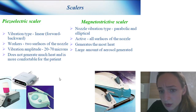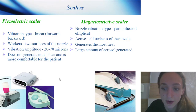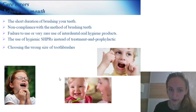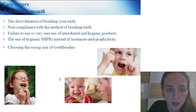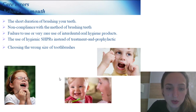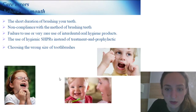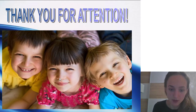Magnetostrictive scaler: nozzle of vibration type; active surface of the nozzle generates the most heat and a large amount of aerosol. Air-flow can also be used for children with different powders; for children, use the powder called Glycine. Causes of poor oral hygiene: short duration of brushing teeth, non-compliance with the method of brushing teeth, failure to use interdental hygiene products, and choosing the wrong size of toothbrush. Thank you for your attention and goodbye.